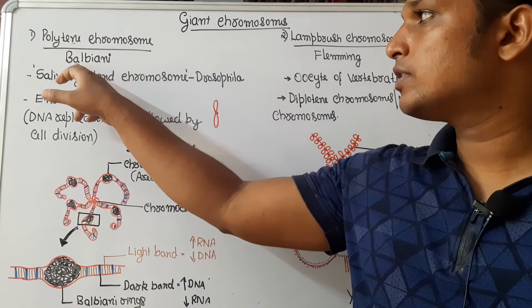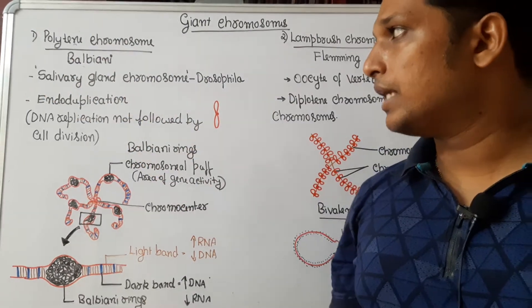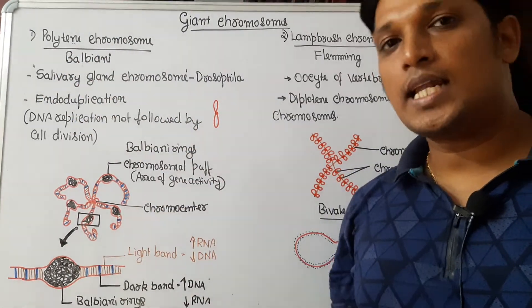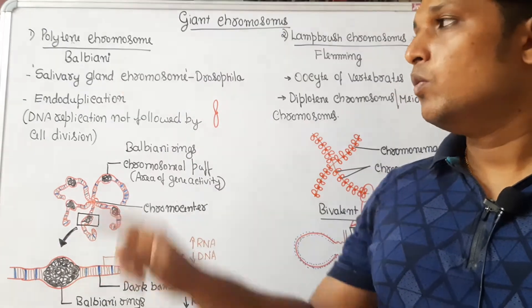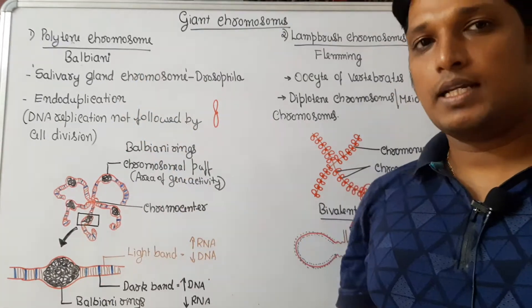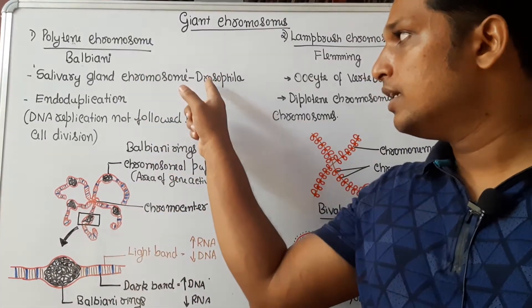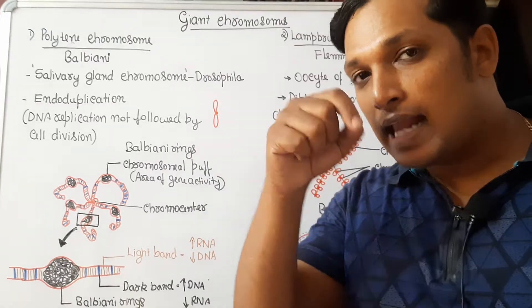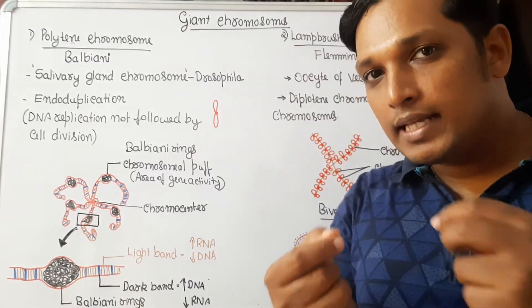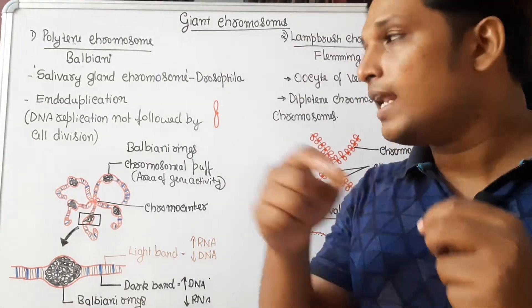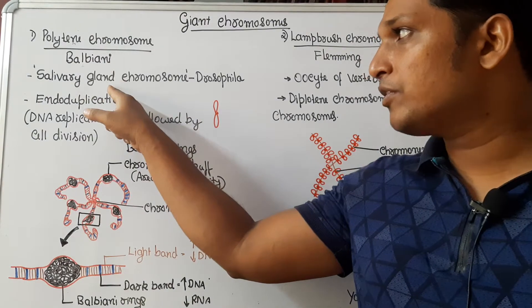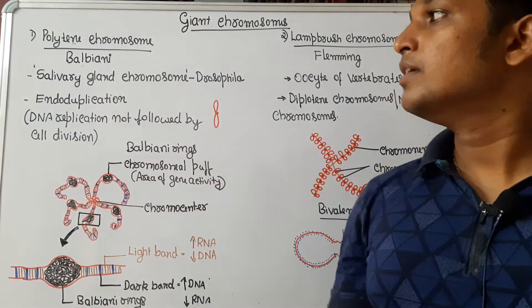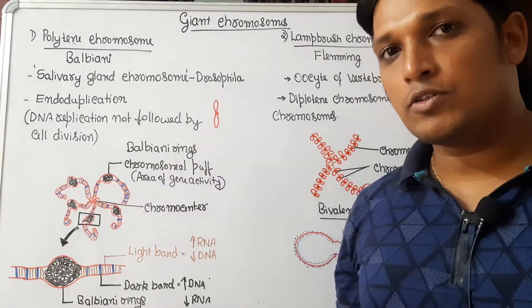Polytene chromosome was discovered by Balbiani. They are also called salivary gland chromosomes. Why salivary gland? Because in Drosophila, the fruit fly, in its larva, the salivary gland will have this giant chromosome known as polytene chromosome — hence the name salivary gland chromosome.